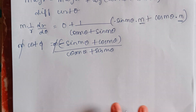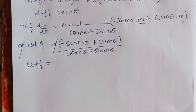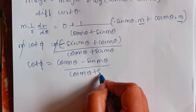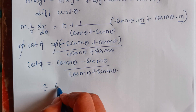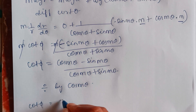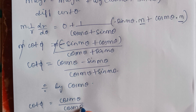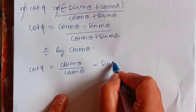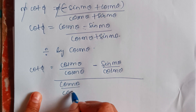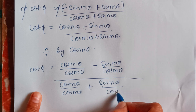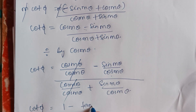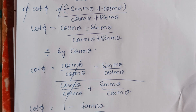m and m will get cancelled on both sides. We then divide both numerator and denominator by cos mθ. The terms simplify: (cos mθ / cos mθ) = 1, and (sin mθ / cos mθ) = tan mθ, giving us (1 − tan mθ)/(1 + tan mθ).